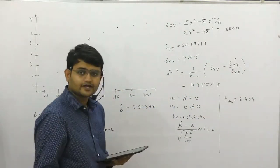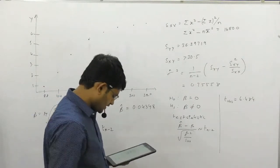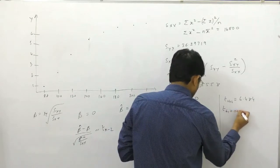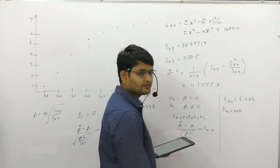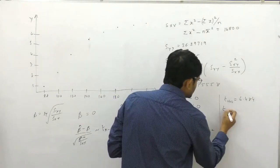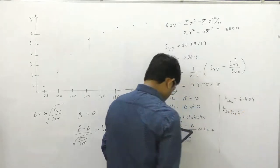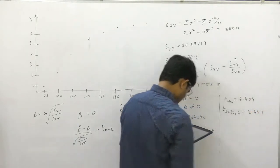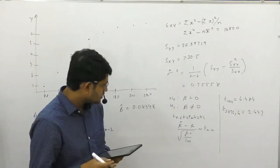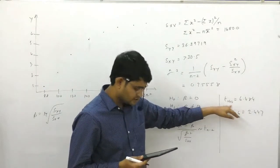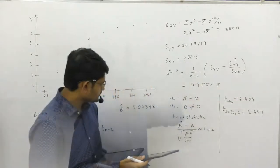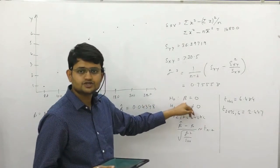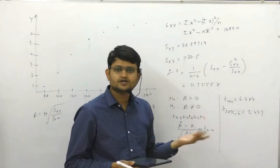Degrees of freedom is n − 2. There were 8 different values, so n − 2 = 6. Find t(6, 0.025), which from our tables is 2.447. Clearly our t-observed is greater than this critical value, so we have enough evidence to reject H0. Hence the correlation coefficient is not 0, or we can say beta is not 0.